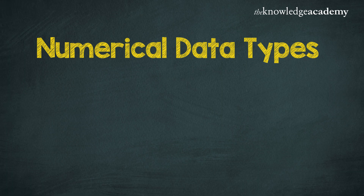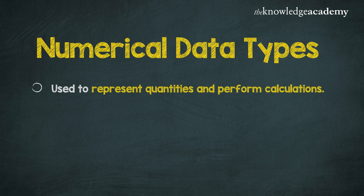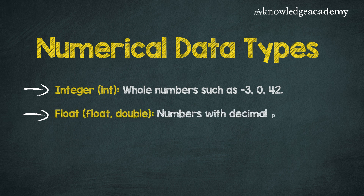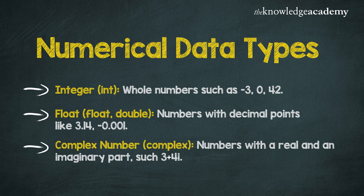First, numerical data types are used to represent quantities and perform calculations. They can be categorized into integers, which are whole numbers such as -3, 0, 42; floats, which are numbers with decimal points like 3.14 or -0.1; and complex numbers, which have a real and imaginary part, such as 3+4i. Integers are useful for counting or indexing, floating point numbers are used when precision is required, and complex numbers are used in advanced calculations such as signal processing.